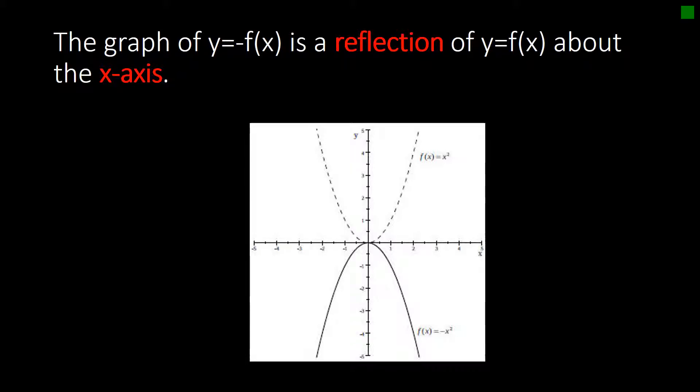The first thing we're going to look at is a reflection of the graph about the x-axis and that occurs when you have y equals negative f of x. So this dotted graph here is the original f of x equals x squared. And if we do f of x equals negative x squared, we simply fold this dotted portion across the y-axis and we'll have the solid graph.